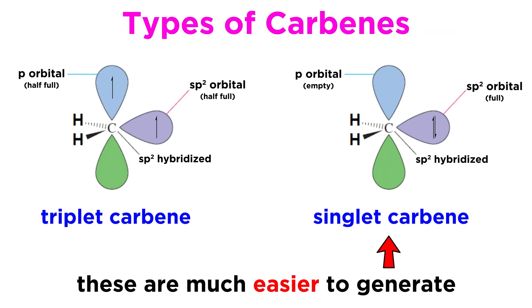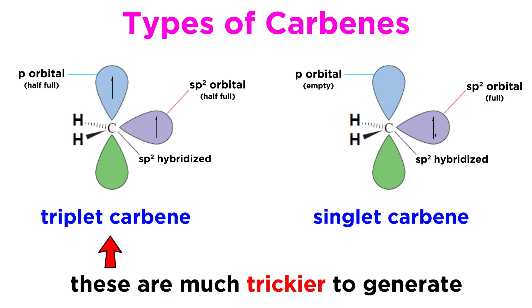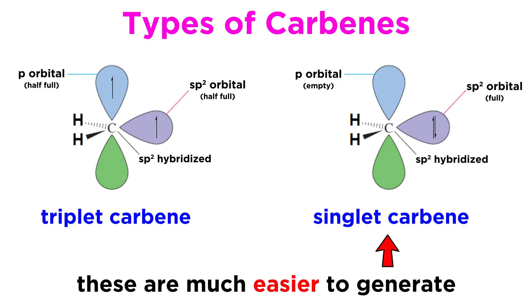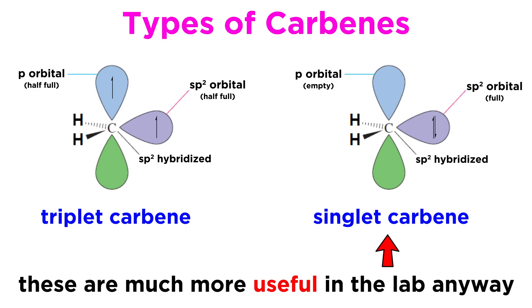As we may begin to gather, most reactions that produce carbenes do produce singlet carbenes. It is a bit tricky to generate triplet carbenes, but it is possible that the singlet form can produce the triplet form through photochemistry, meaning interaction with light of a particular wavelength. For now we will just understand that carbene formation usually generates singlet carbenes, which is preferable anyway, since singlet carbenes are more useful in organic synthesis, as we will see in a moment. So let's move forward and see exactly what we can do with these things.